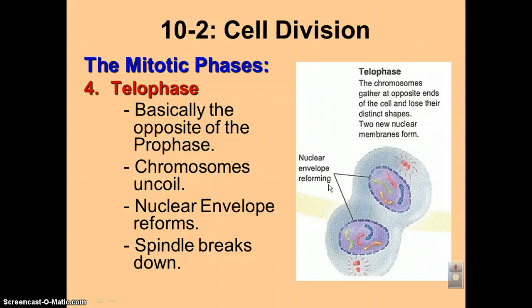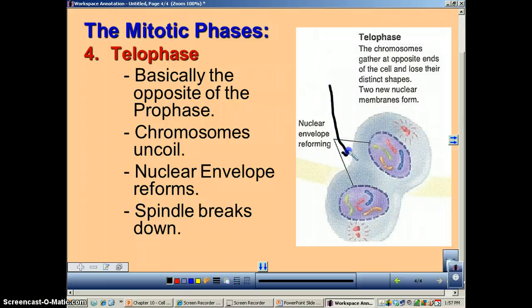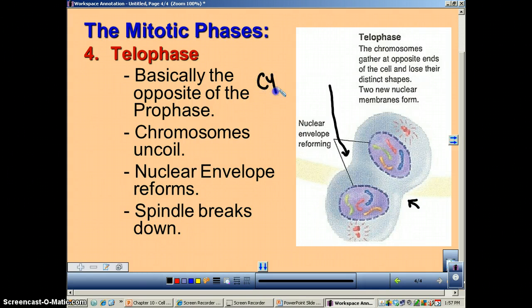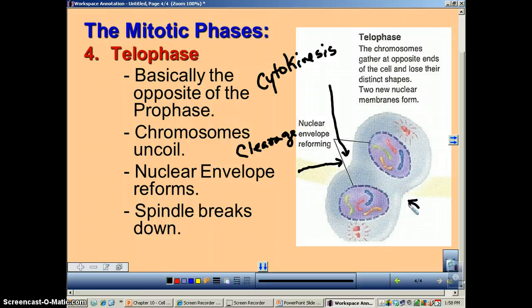The nuclear envelope, as it says right here, is beginning to reform. There's also something interesting happening in this picture that will be the focus of the next podcast: you can see this little indentation here and another one there — this is the beginning of cytokinesis. Cytokinesis is the term for when the eukaryotic cell itself begins to divide. This indentation has a special name: it's called a cleavage furrow. Cleavage means cut, so you're beginning to cut the cell in half.